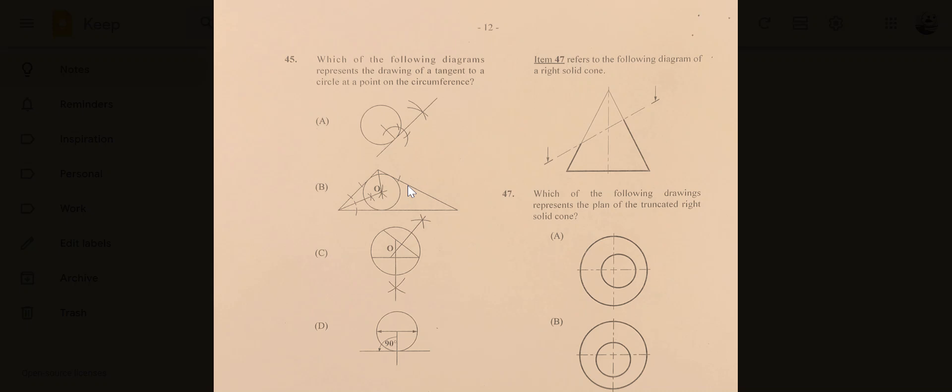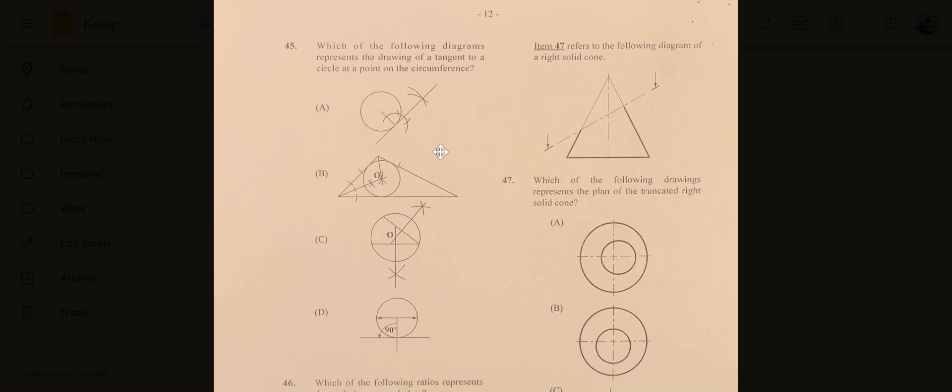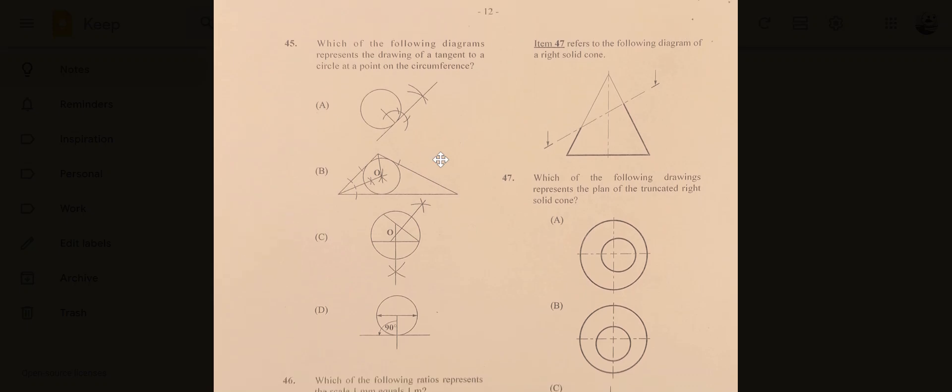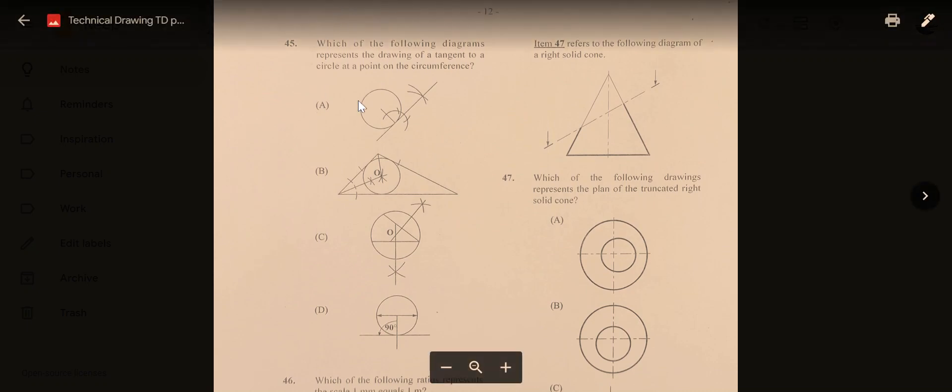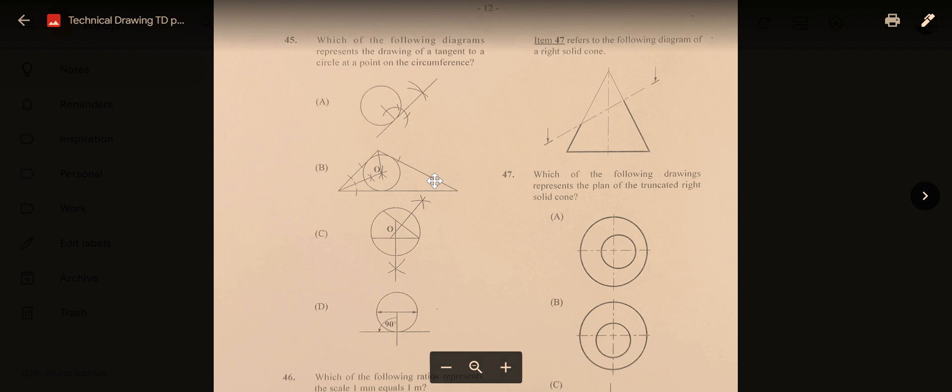My humblest apologies. I totally omitted questions 45 to 47 from 2023, so here I am shamefully doing it after the fact. I apologize again. Number 45: which of the following diagrams represents the drawing of a tangent to a circle at a point on the circumference? This answer is A. It's pretty straightforward.